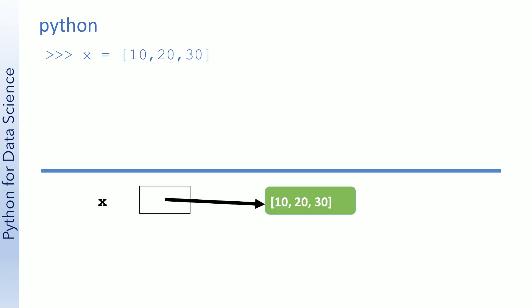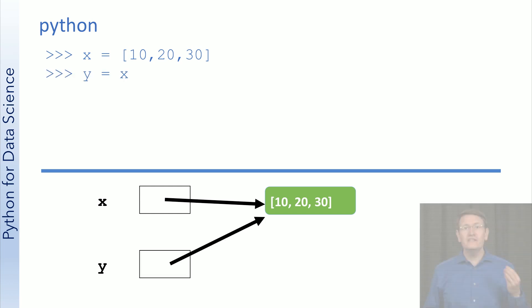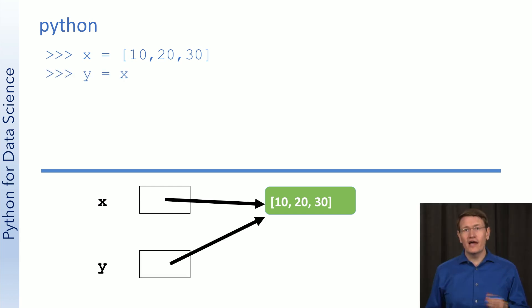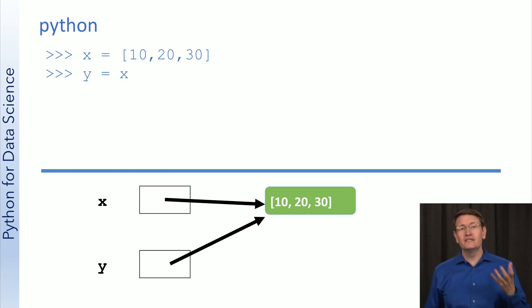We start with creating a list which holds the values 10, 20, and 30, and then we set up variable x to refer to that list. When we then set y to equal x, that simply makes y refer to the same list in memory.